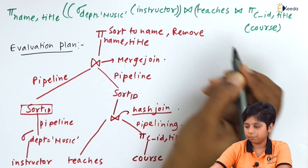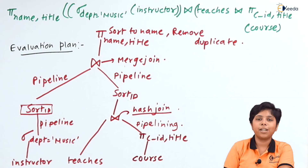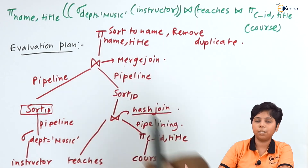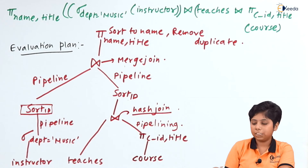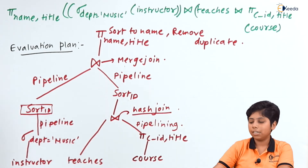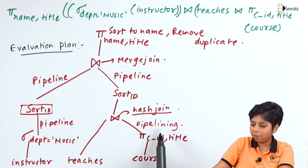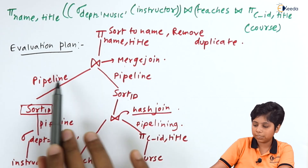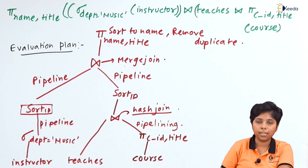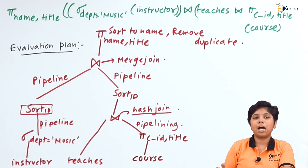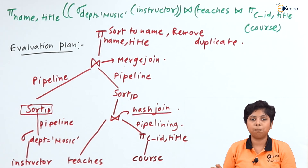Finally, in the projection step we sort by name and remove duplicates — any duplicate values are eliminated here. Earlier we sorted by instructor ID; now we sort by instructor name. In total there are nine evaluation plan steps being taken to perform this query optimization.